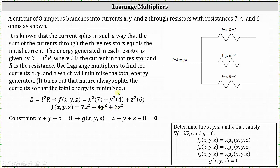The constraint is formed by knowing that the current splits in such a way that the sum of the currents through the three resistors equals the initial current. The initial current is eight amps, and therefore the constraint is x plus y plus z equals eight. For the method of Lagrange multipliers, we say g of x, y, z equals x plus y plus z minus eight equals zero.